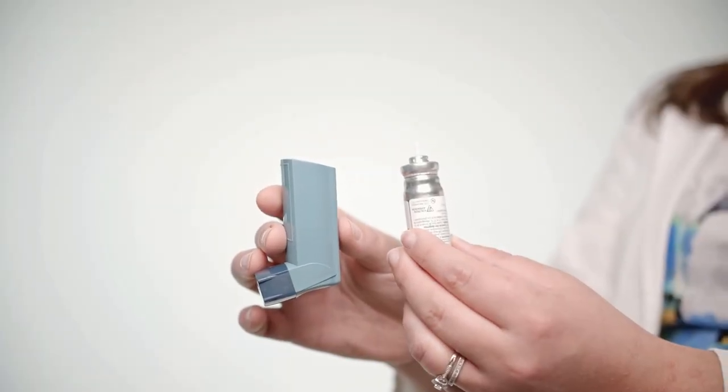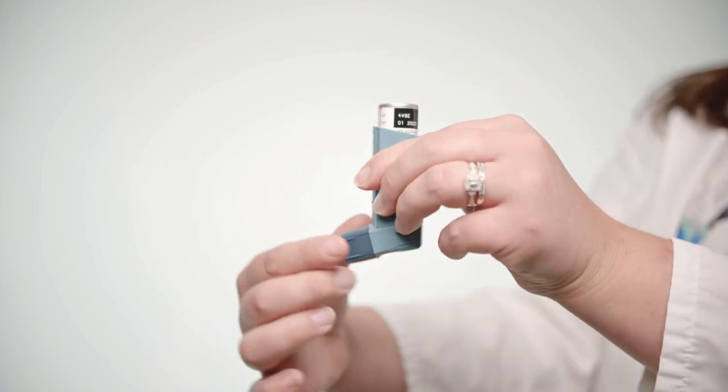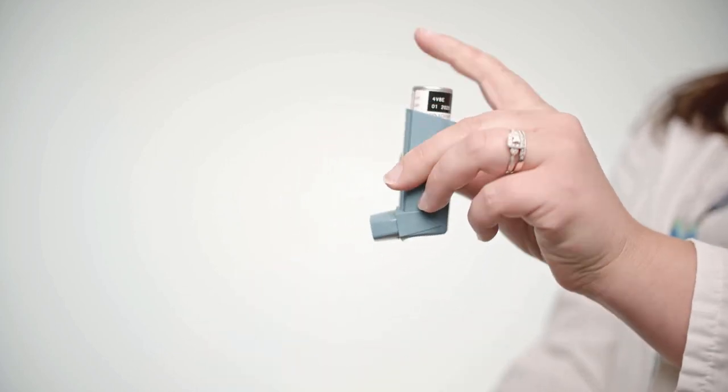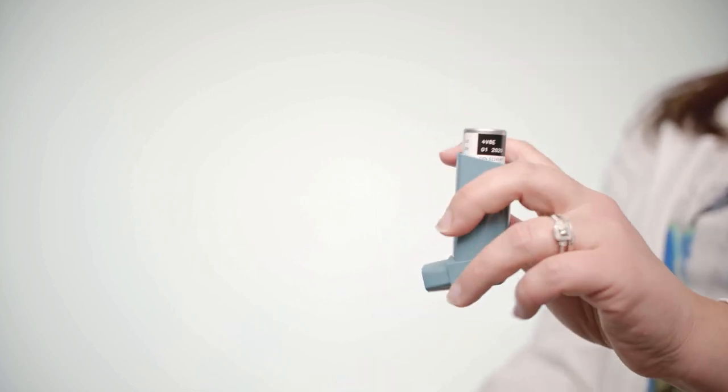Start by preparing the inhaler. Insert the medication canister into the top of the inhaler and remove the mouthpiece cover from the bottom. Shake the inhaler for at least a few seconds to ensure the contents of the canister are properly mixed.